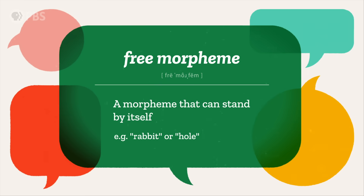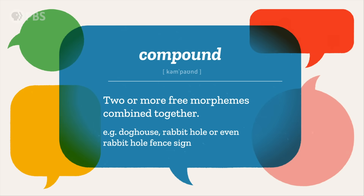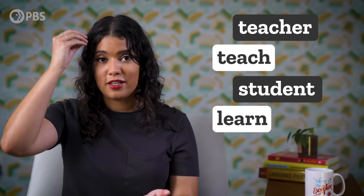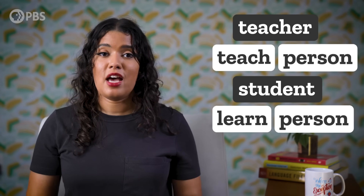There are a couple of different kinds of relationships that morphemes can have with each other. When we have a morpheme that can stand by itself, that's a free morpheme, like rabbit or hole. When we have two or more free morphemes combined together, that's a compound — whether it's written with a space, a hyphen, or all joined together, such as doghouse, rabbit hole, or even a rabbit hole fence sign. In American Sign Language, there are signs that are compounds composed of TEACH and LEARN, plus a variant of the sign PERSON. Recognizing compounds allows us to see similarities between languages that we might have missed.